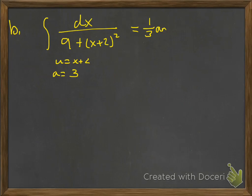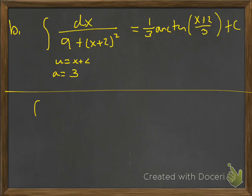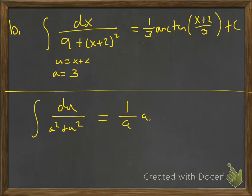The arc tan answer is going to be 1 over a, or 1 over 3, times arc tan of (x+2) divided by 3, plus the constant of integration. And we'll go ahead and write that integral formula for arc tan just for reference.